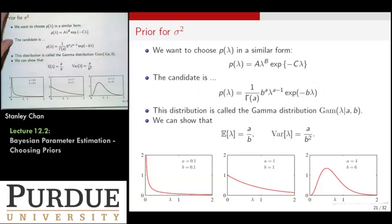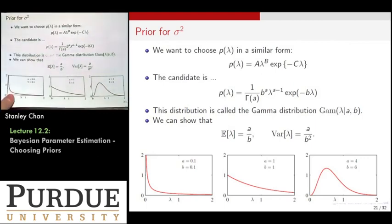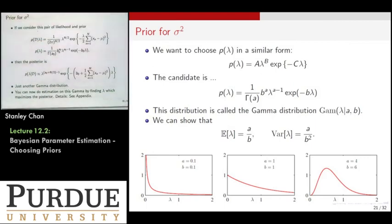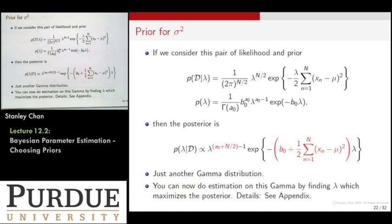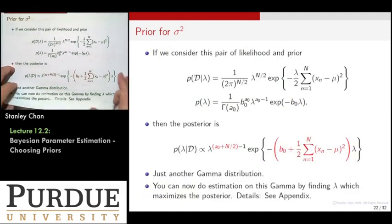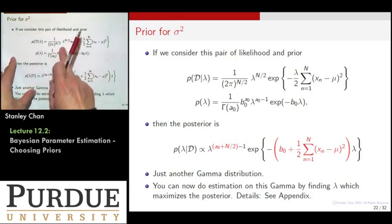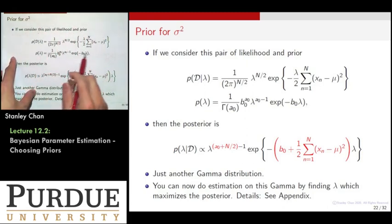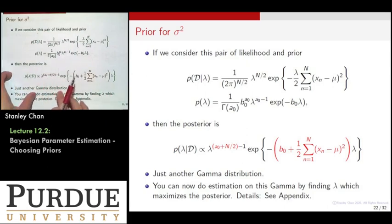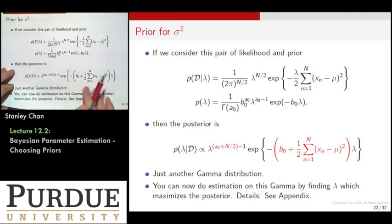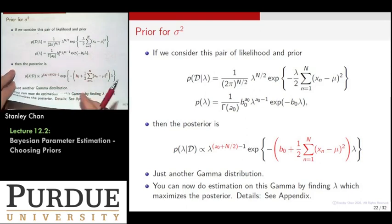The data is still a likelihood of the Gaussian, but by using a gamma prior for your variance, you're going to show that the posterior distribution will remain the same form as your likelihood, so that you can obtain the mean and variance easily for that distribution. This is just another slide summarizing that if we consider this pair of likelihood and prior, you can show that it takes a specific form and with a little more calculation, it's just another gamma distribution. So the posterior distribution is a gamma distribution, and finding the mean and variance of the gamma distribution has known techniques.